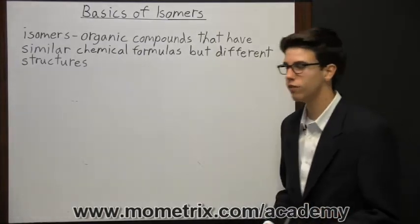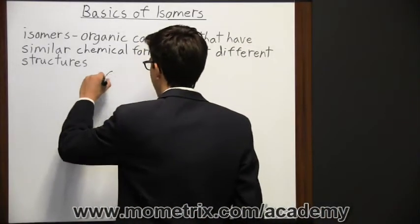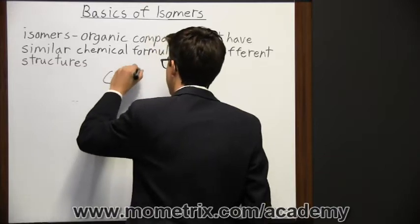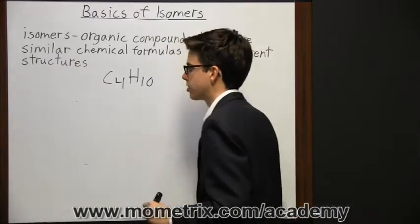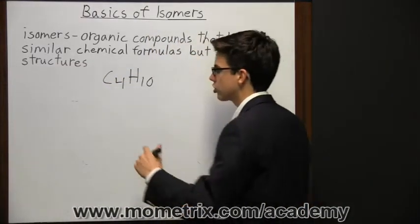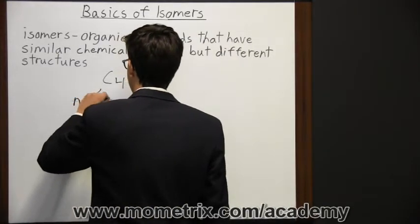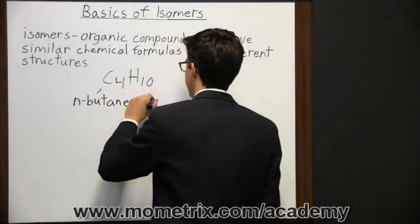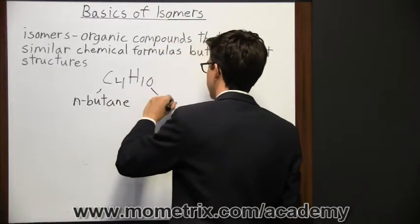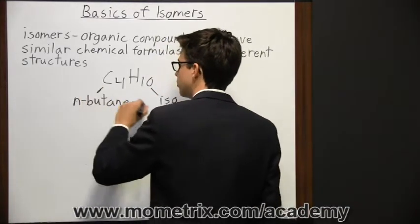Now for example, a molecule of butane has four carbon atoms and 10 hydrogen atoms. It can have two different structures: one is normal butane, which we can abbreviate to be n-butane, and then we have isobutane.